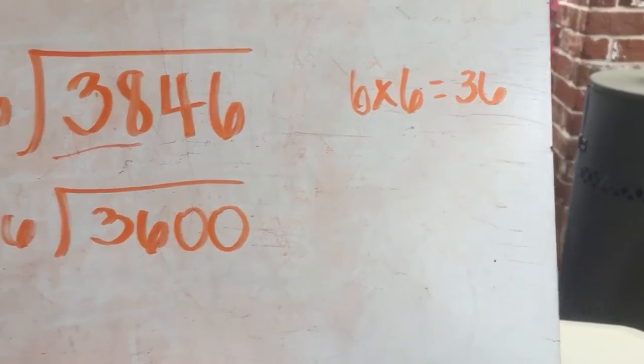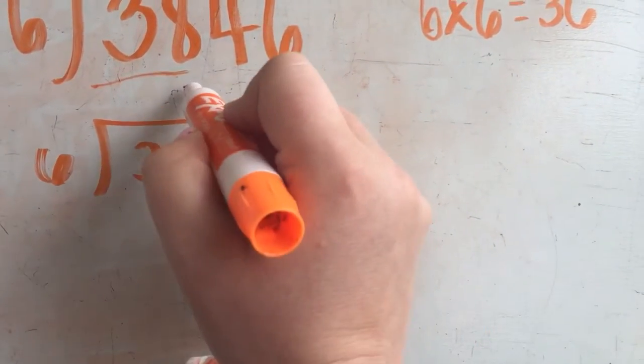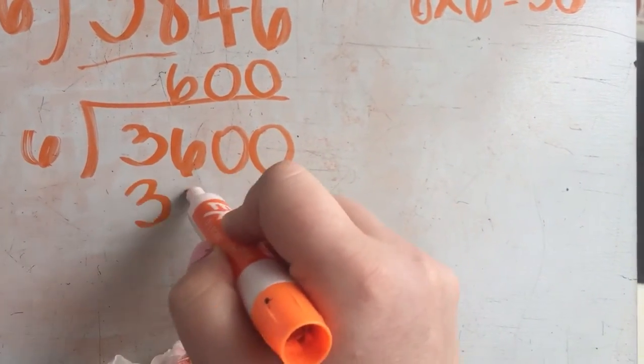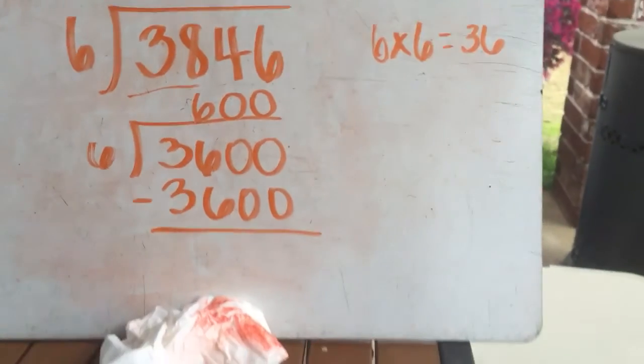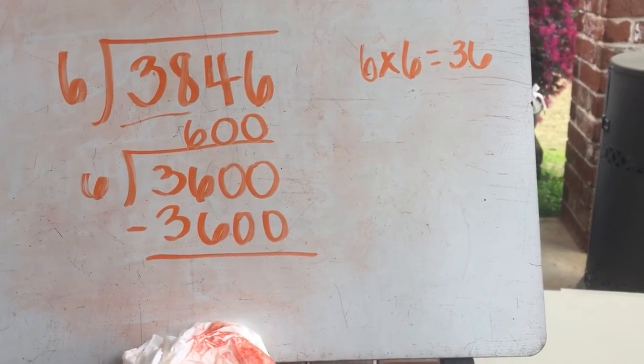Now guess what, since I already know six times six is 36, I know that it's going to be 600, and within about 10 seconds your child can have a quick estimate using compatible numbers.